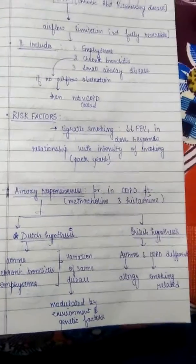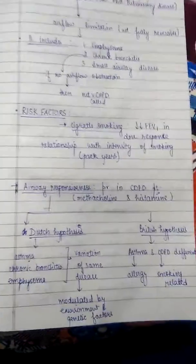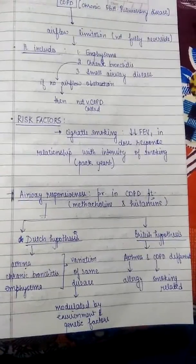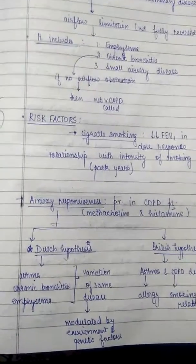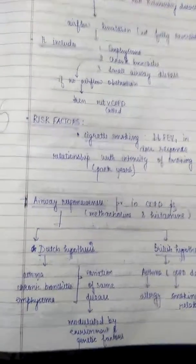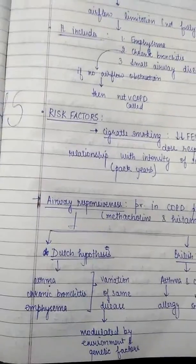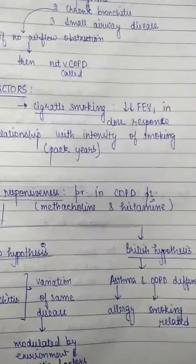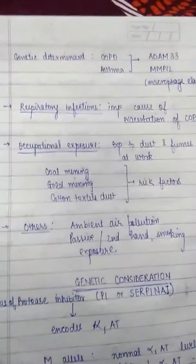Airway hyperresponsiveness is present in COPD patients — airways are hyperresponsive to methacholine and histamine, similar to asthma. We have two hypotheses: the Dutch hypothesis states that asthma, chronic bronchitis, and emphysema are variations of the same disease modulated by environmental and genetic factors. The British hypothesis states that asthma and COPD are different — asthma is allergic and COPD is smoking-related.